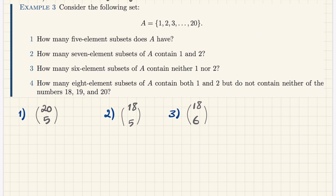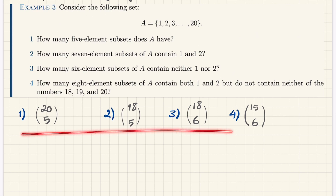Number 4: how many 8-element subsets of A contain both 1 and 2 but do not contain 18, 19, or 20? I must choose 8 elements, but 2 are already chosen (1 and 2), so I need 6 more. However, 1 and 2 are gone, and 18, 19, 20 are forbidden — that's 5 items removed from 20, leaving 15. So I choose 6 out of 15: the answer is 15 choose 6.